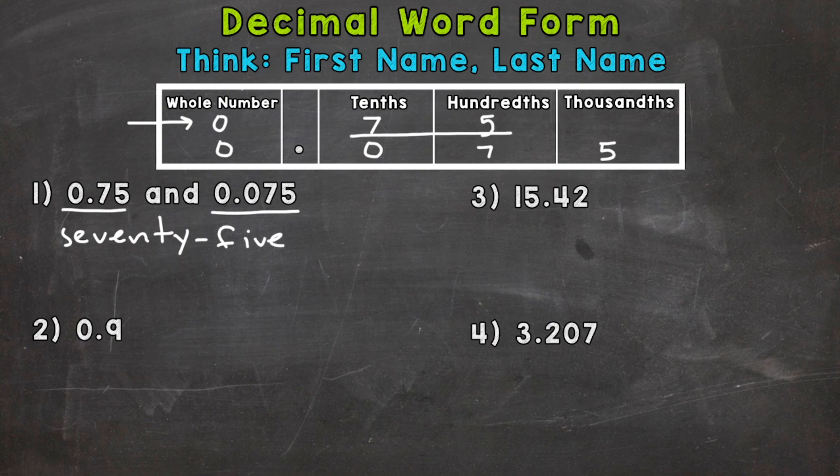Now, the last name is going to be wherever that decimal ends, the place it ends. In the case of the top one, it ends in the hundredths place. So that's the last name. First name, 75. Last name, hundredths. And that's how you say that decimal, and therefore, what you write down, and you have word form. So 75 hundredths.